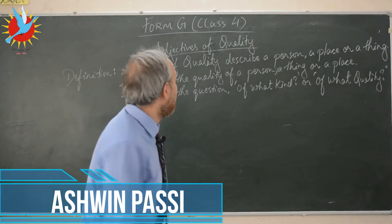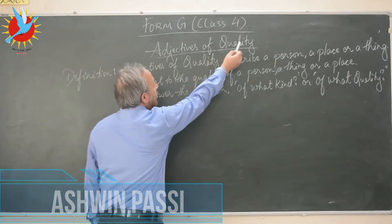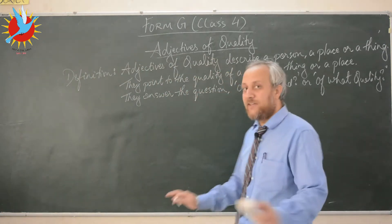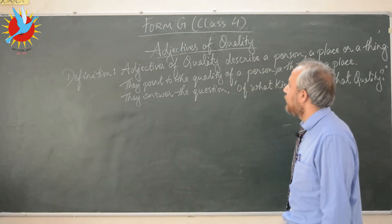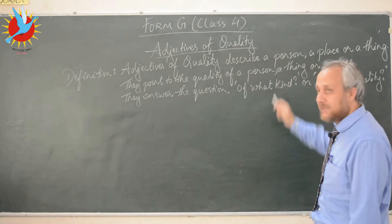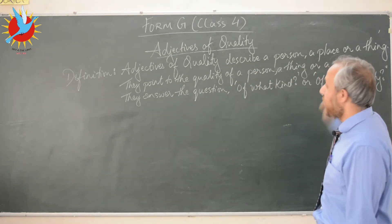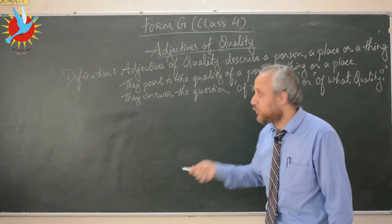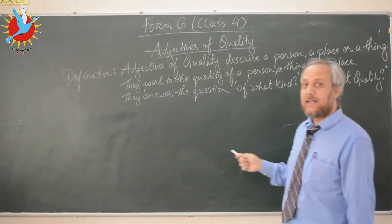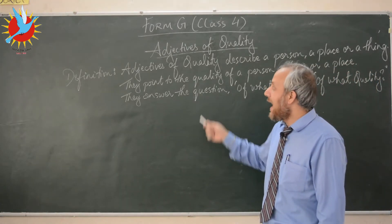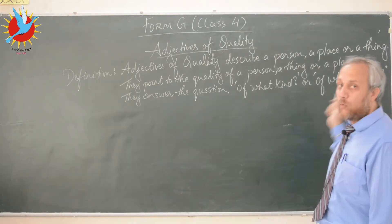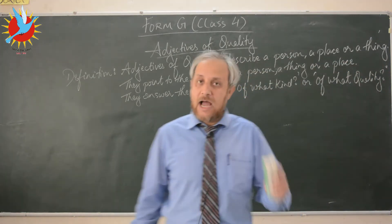Hello kids, today we will do adjectives of quality. The definition is very simple: adjectives of quality describe a person, a place, or a thing. They point to the quality of a person, a thing, or a place. They answer the question 'of what kind' or 'of what quality.'